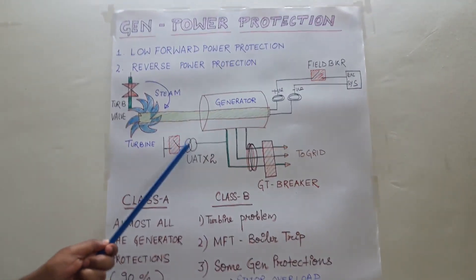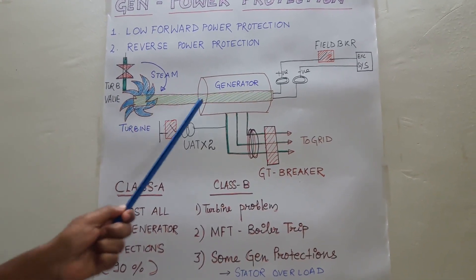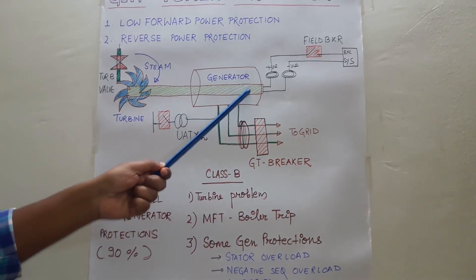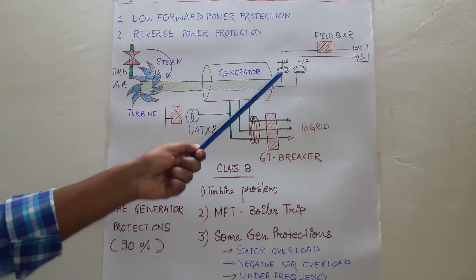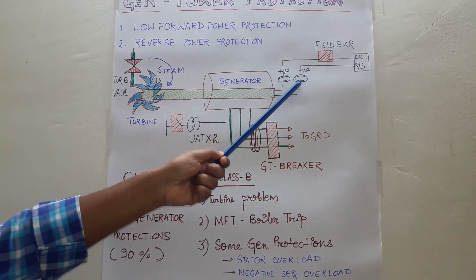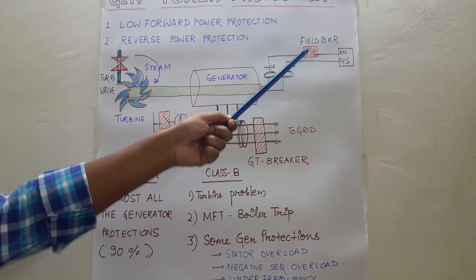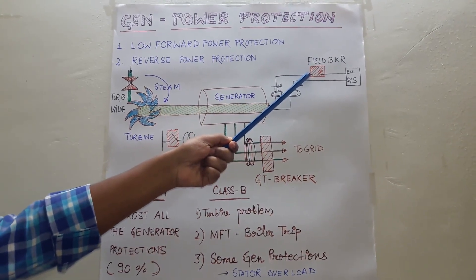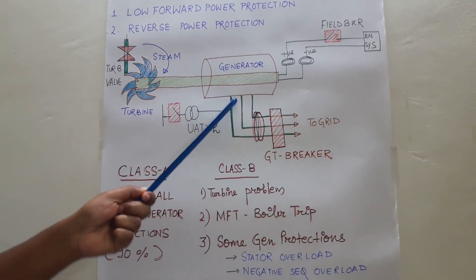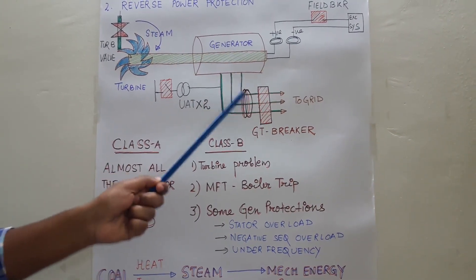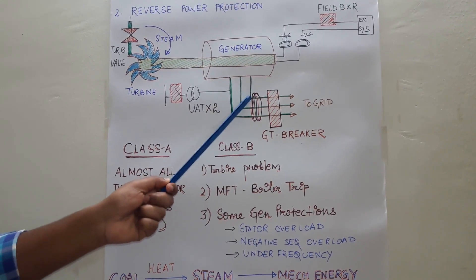Let's start with this schematic. Here I have shown a turbo generator. This is the turbine, this is the generator, and this is the rotor of the generator. The rotor is connected with two slip rings — positive slip ring and negative slip ring. This is the excitation breaker, which is also called the field circuit breaker. This is the IPBD from the generator. The active energy is flowing through the IPBD to the generator transformer, and from the generator transformer it is transmitted into the grid.